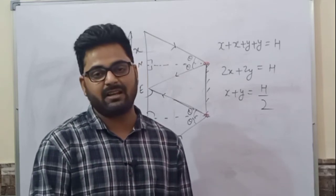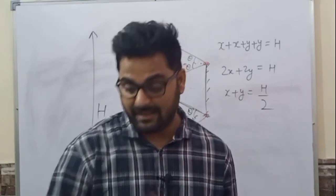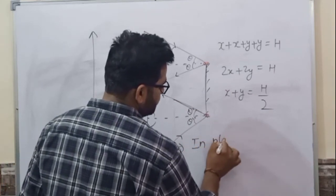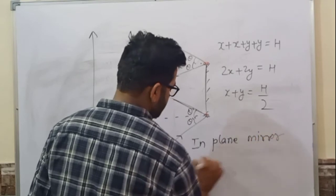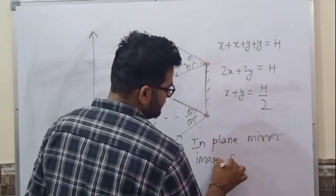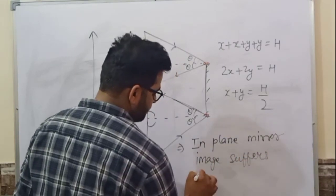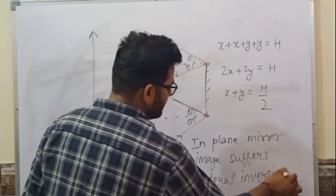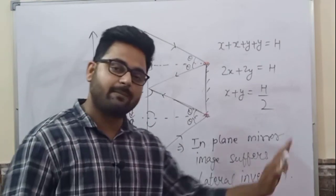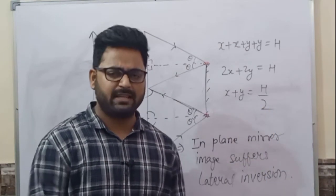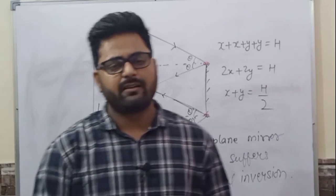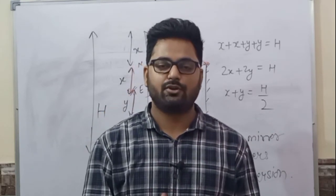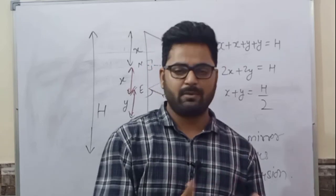Now in plane mirror, there is something called lateral inversion. In a plane mirror, the image suffers lateral inversion. Lateral inversion means the right side appears on the left side and the left side appears on the right side. If you raise your right hand in front of a mirror, it appears to be the left hand in the image. That is called lateral inversion.